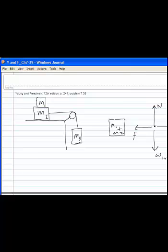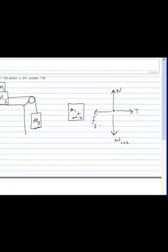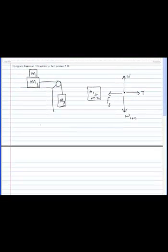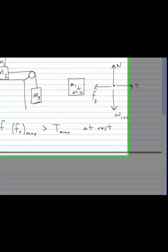So I'm going to assume we have static friction. If the maximum static friction force is greater than the maximum tension, then it's at rest. If it's less than the maximum tension, this is going to be sliding to the right, and we have to look at kinetic friction.